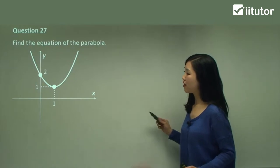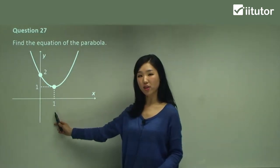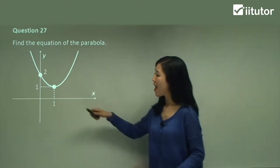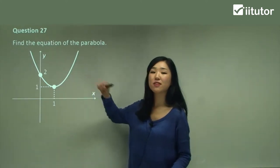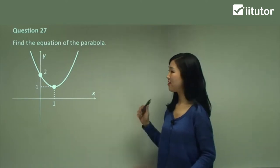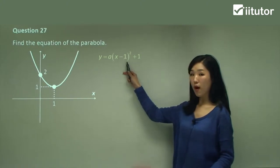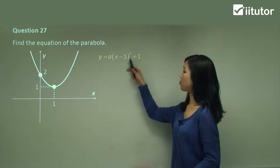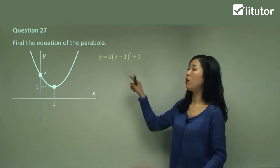So in this graph, you can see that it shifted to the right by one unit. When we shift to the right, we subtract 1 from x. And you can also see that we have shifted up by one. If it's shifted up by one, we know that we add one to the whole equation. So our equation will look like this — we subtract 1 from x because we shifted to the right, so it's going to be x minus 1 squared, and because we shifted it up, we add one to the whole equation.